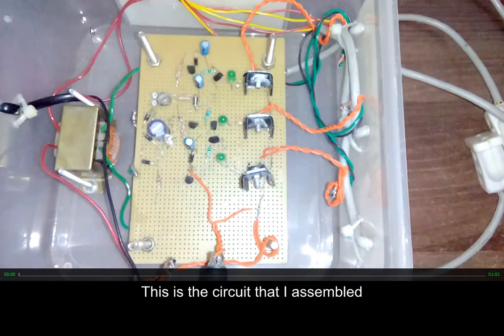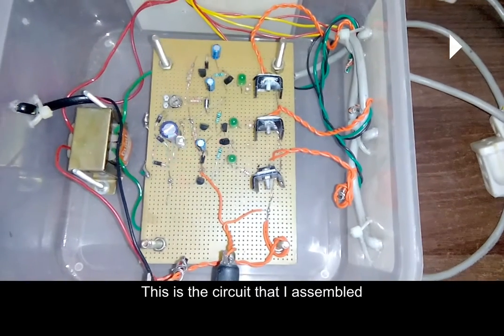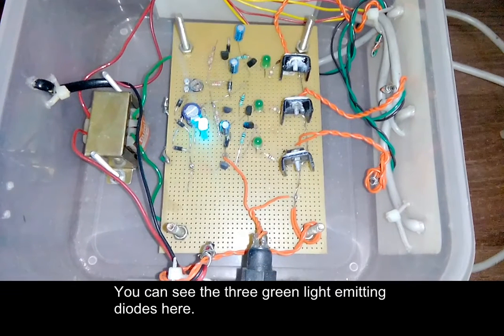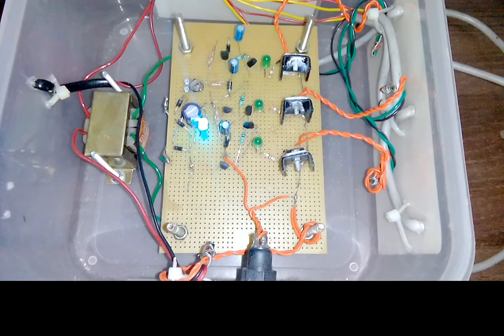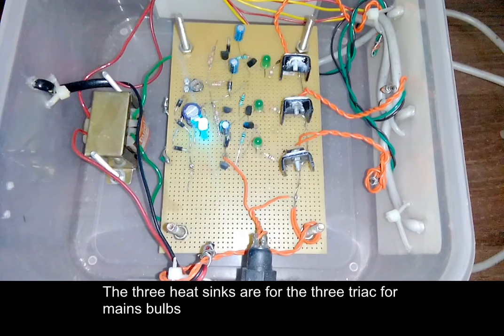This is the circuit that I assembled. You can see the three green light-emitting diodes here. The three heat sinks are for the three triacs for mains bulbs.